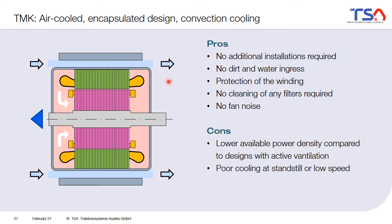There is also a special form of this cooling concept where no fan is used at all. You still use an encapsulated design but only natural convection cooling on the outside. It requires no additional installations, making it a very simple concept. Because it is encapsulated, no dirt or water can come inside, the windings are protected, no filters are needed, and there is no fan noise. However, the major disadvantage is that cooling works quite poorly, resulting in very low power density. Especially at low speed or standstill, there is nearly no cooling at all.